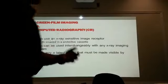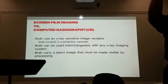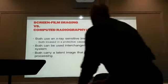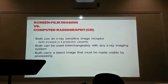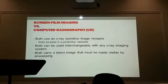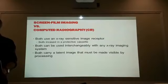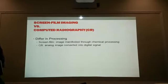The difference between screen film imaging and computed radiography, or CR, is that both use an x-ray sensitive image receptor — in this case, cassettes. One cassette has film; the other cassette will contain the photostimulable phosphor. Both can be used interchangeably with your x-ray equipment, meaning we don't have to exchange or re-outfit our x-ray rooms. Both carry a latent image that must be made visible by processing.